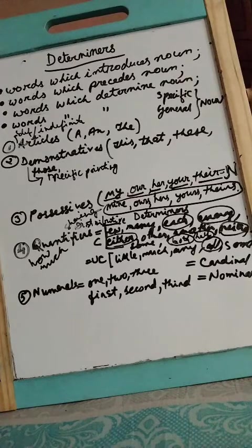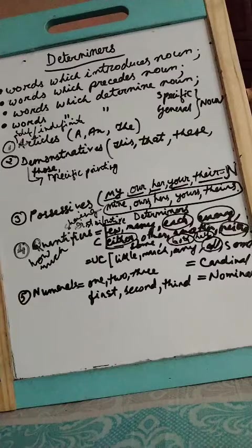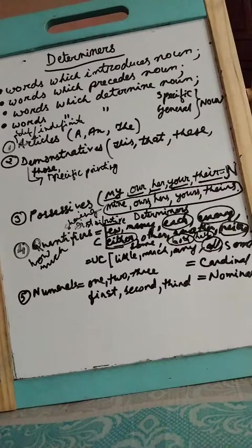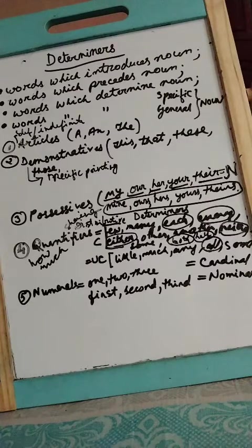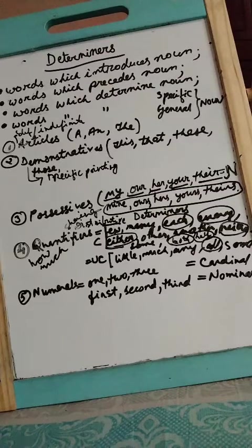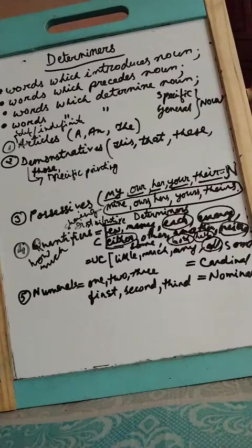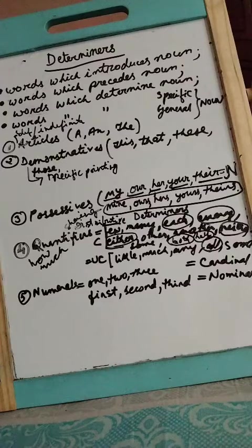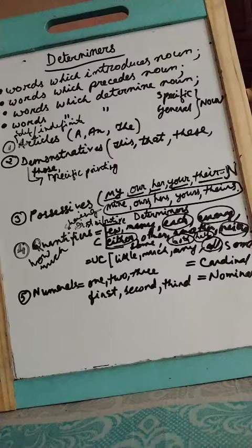So these also come under determiners. Please try to remember: determiners are those words which precede the noun. They determine the noun, they may specify something, they may talk about general things. There are five categories: articles, demonstratives, possessives, quantifiers, and numerals. Go through this class again and again. These are just basic preliminary introduction. Hopefully we will do more in detail in future. Thank you.